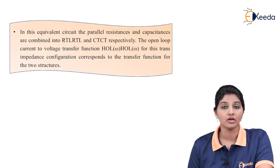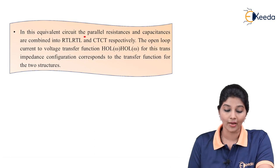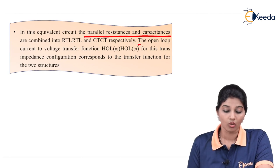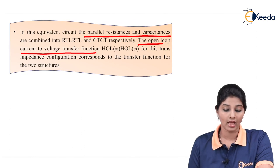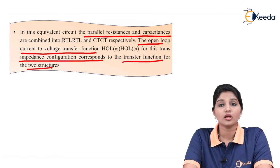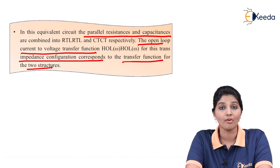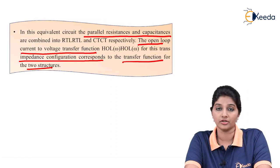The equivalent circuit of the optical fiber receiver incorporating a trans-impedance front end is shown in the figure. In that equivalent circuit, the parallel resistance and capacitance are combined into RTL and CTL. The open loop current-to-voltage transfer function HOL(ω) for this trans-impedance configuration corresponds to the transfer function of the two structures. This covers the various optical amplifiers used in the optical fiber communication system and their applications for regenerating the signal by placing them at regular intervals.